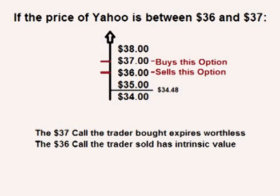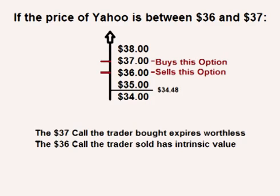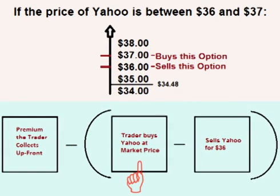If the price of Yahoo is between $36 and $37, the option the trader bought expires worthless. However, the option that the trader sold has intrinsic value — the strike price is $36 and the price of Yahoo is above $36. The intrinsic value is the difference between the current price of Yahoo and the $36 strike price. In other words, the trader must theoretically buy Yahoo at the market price between $36 and $37, sell it for $36, and lose the difference.